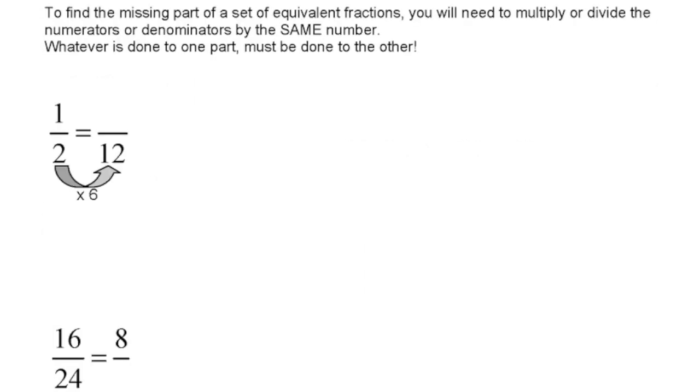Moving down, to find the missing part of a set of equivalent fractions, you need to multiply or divide the numerators or denominators by the same number. Whatever is done to one part must be done to the other.